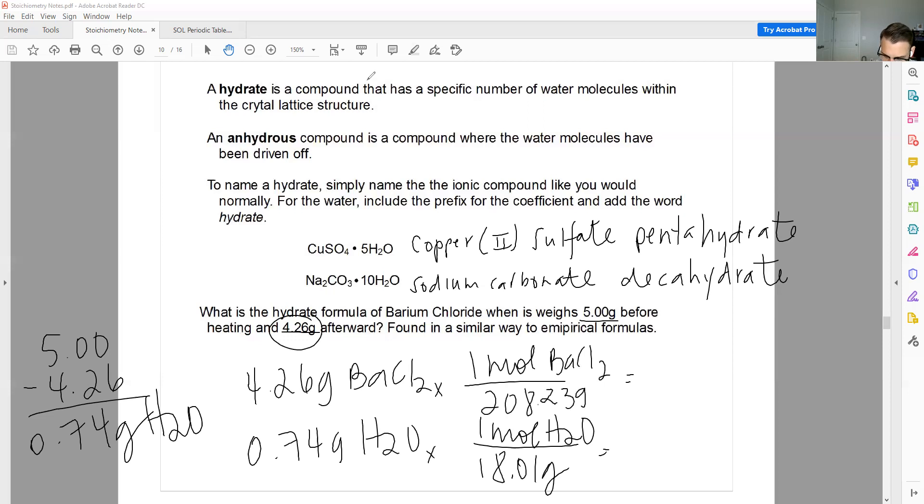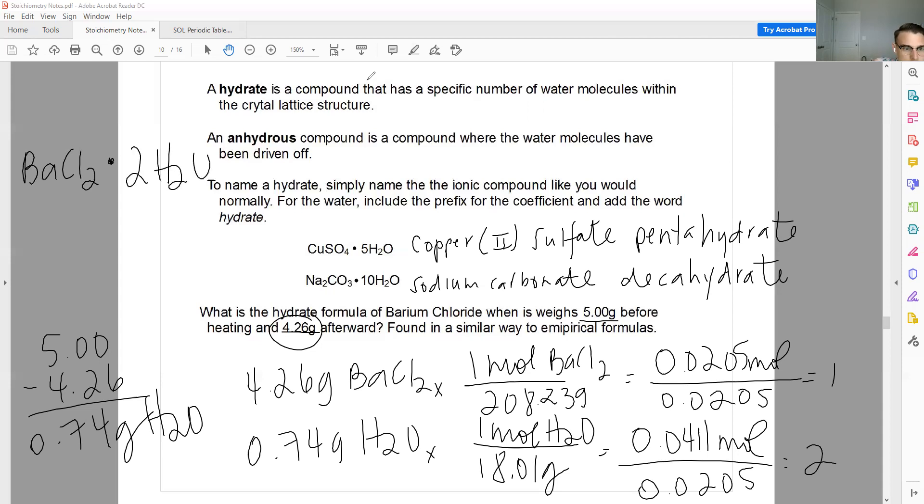Turn the grams into moles. 208.23. That gives me 0.0205 moles. That gives me 0.0411 moles. Divide by the lowest number. When you're doing an empirical formula, the lowest number should always be the compound and not the water. You're always going to have one of the compound to one or more water molecules. Please keep that in mind. That's one. That's so close to two. That my formula, I'm going to write it over to the side. The compound is going to be the compound. BaCl2·2H2O. Because there was two H2Os, one of the compound. And so we would call that barium chloride dihydrate.